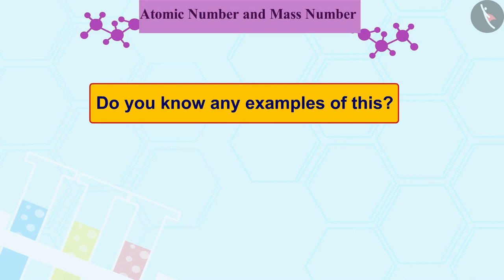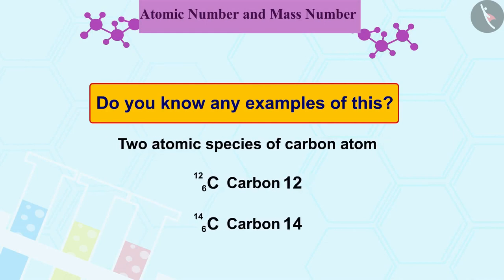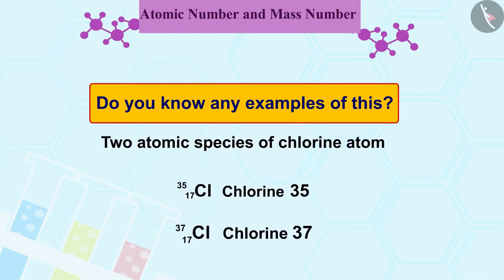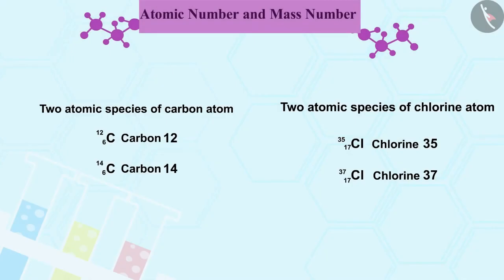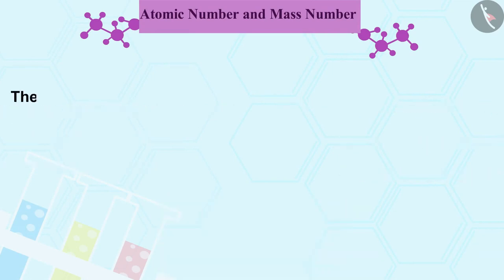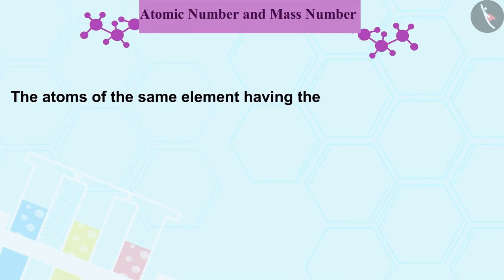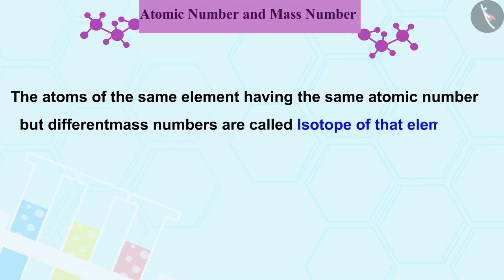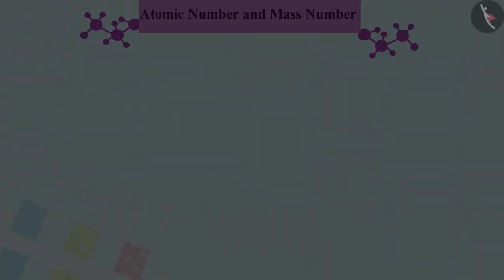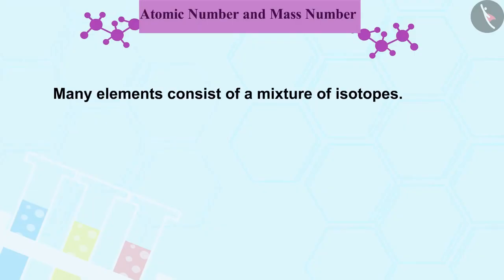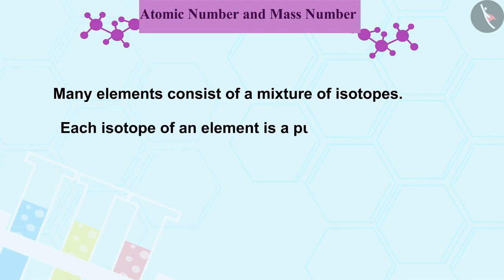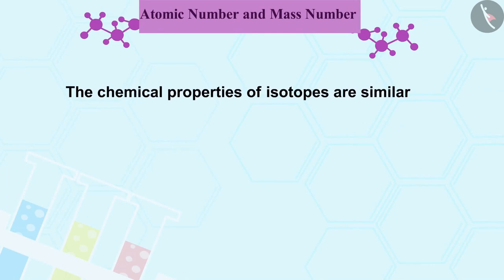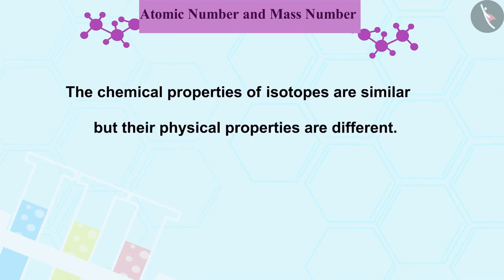Do you know any examples of this? Carbon-12 and carbon-14, and chlorine-35 and chlorine-37 are some other examples of this kind. These atomic species have a special name — we call them isotopes. The atoms of the same element having the same atomic number but different mass numbers are called isotopes of that element. Many elements consist of a mixture of isotopes. Each isotope of an element is a pure substance. The chemical properties of isotopes are similar but their physical properties are different.